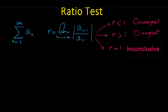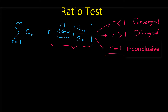To determine the convergence or divergence of a series with the ratio test, first we have to find the limit of a sub n plus one over a sub n. If this limit is less than one, the series is convergent. But when this limit equals one, we cannot conclude anything and we have to use other tests.